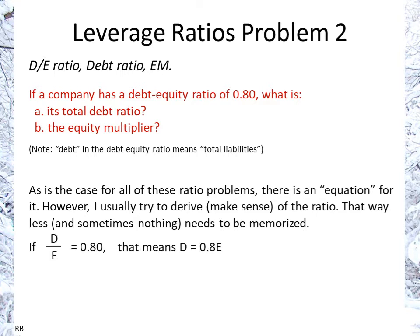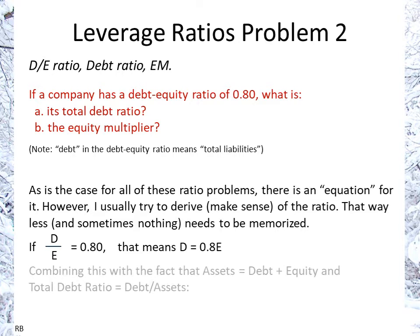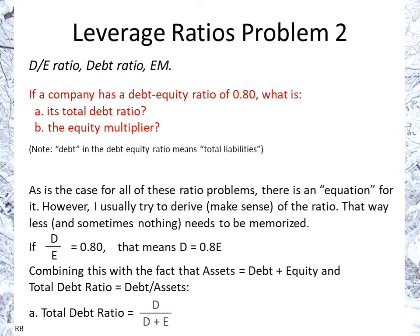If debt to equity — so debt divided by equity — is 0.8, that means debt equals 0.8 times equity. Combining this with the fact that assets equals debt plus equity, and that the total debt ratio is debt divided by assets, we have: total debt ratio = debt over (debt plus equity). Since debt is 0.8 equity, the denominator becomes 0.8 equity plus 1 equity, giving us 1.8 equity.